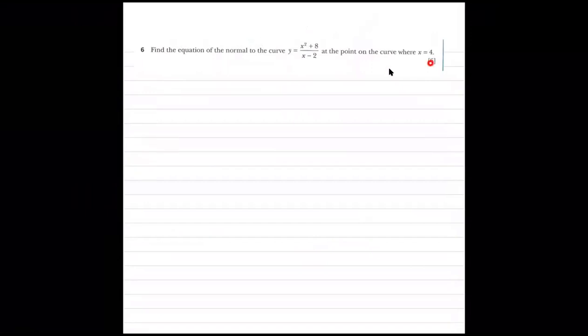Find the equation of a normal to the curve y equals to x squared plus 8 over x minus 2, at the point on the curve where x is 4. You need to find the equation of the normal. There is a curve whose equation is given. At x equals to 4, if you differentiate, you are going to get the gradient of the tangent, and hence the gradient of the tangent line. But we don't want the equation of the tangent — we want the equation of the normal line. The normal, the tangent, and the curve all pass through the same point.